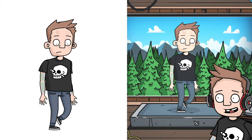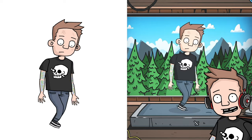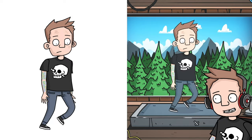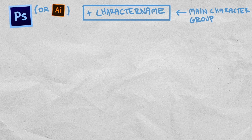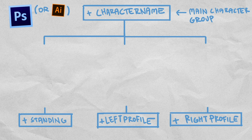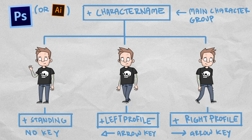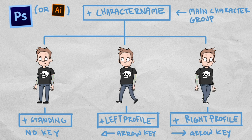Do I use this all the time? No I don't. But it's an amazing tool to have in your animation toolbox. The way it is set up is basically that we'll have three character folders: standing, left profile, and right profile, set up so that when no arrow key is pressed down the standing puppet will be active, and when left or right keys are pressed down our character will walk in that direction.